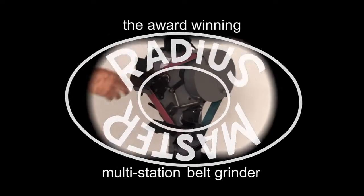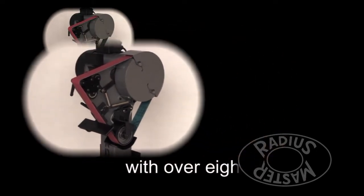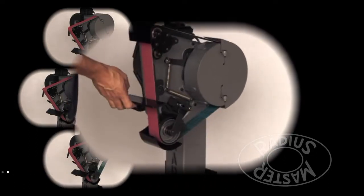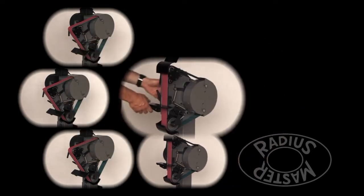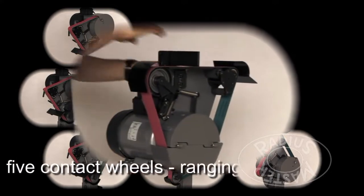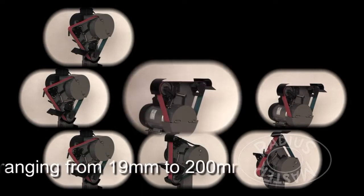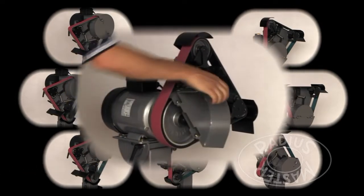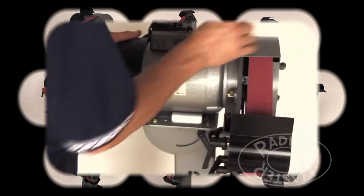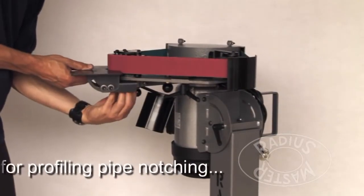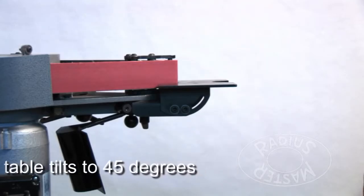The Radius Master meets the diverse requirements of many manufacturing industries. Laying it on its side instantly converts it to a bobbin grinder, providing notching and accurate profiling of edges from square through to 45 degrees.